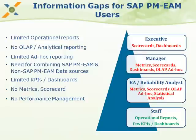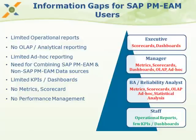We see several information gaps. Most of the time we get operational reports, but getting OLAP or analytical reporting is not easy. Ad hoc reporting with BW is also somewhat limited. Basic KPIs may not be sufficient for a particular business — depending on their initiatives, they may want to monitor other metrics, scorecards, and so on. There is no formal performance management built in. The information needs of different roles are very different: executives want a dashboard with the ability to drill down into metrics and detailed reports.